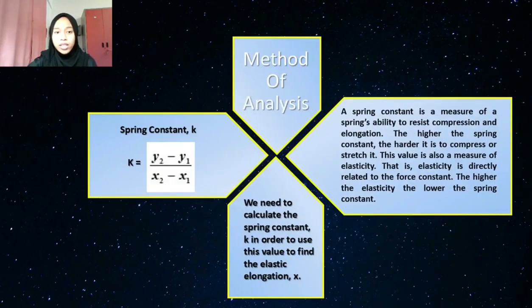Next equation is spring constant K. We need to calculate the spring constant K in order to use this value to find the elastic elongation X. A spring constant is a measure of a spring's ability to resist compression and elongation. This value is also a measure of elasticity. The higher the elasticity, the lower the spring constant.